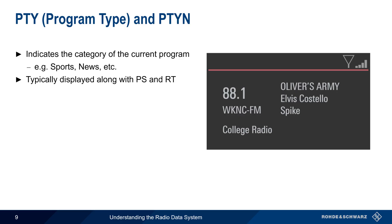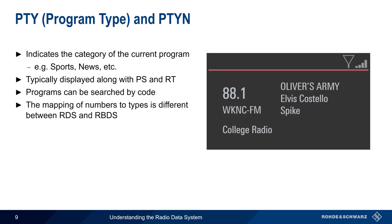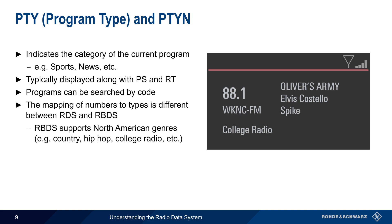In addition to displaying the type of program, PTY also enables searching for radio programs based on their type. Note that the mapping of PTY numbers to types is different between RDS and RBDS. RBDS defines some PTY types to support common North American radio genres, such as country, hip-hop, college radio, etc.